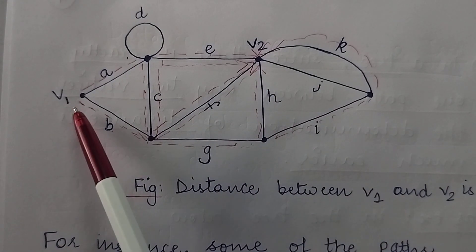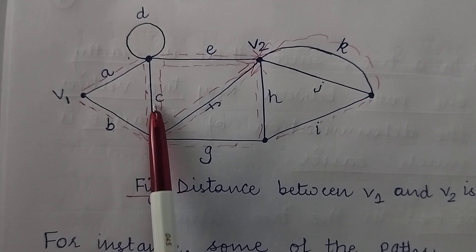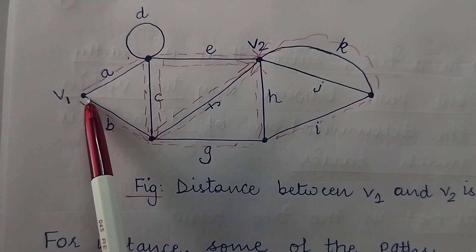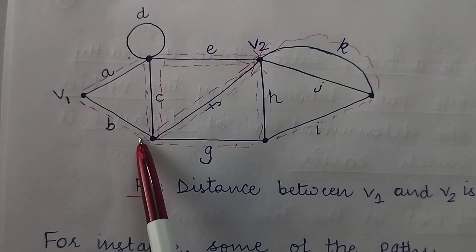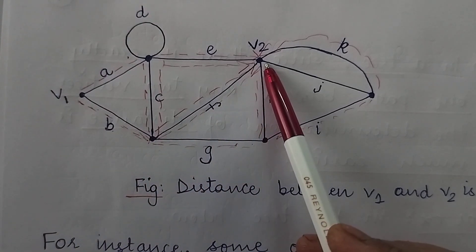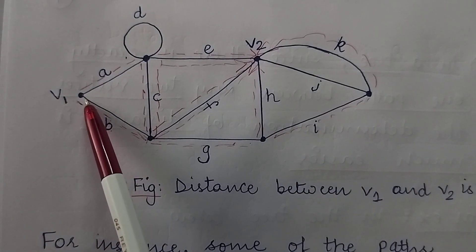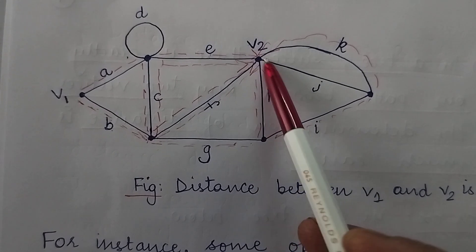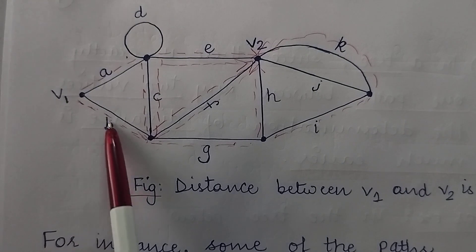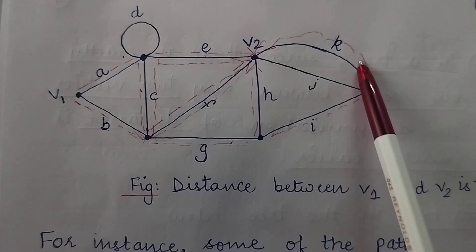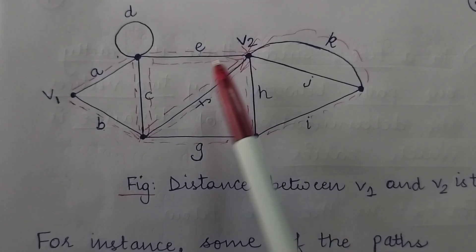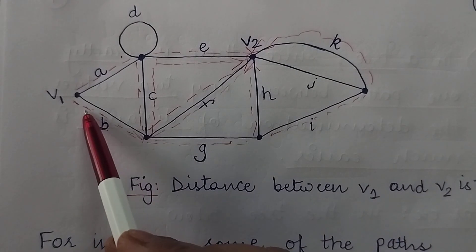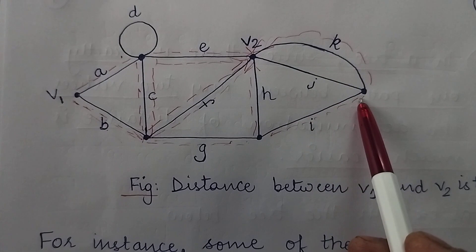The second path is via edges a, c and f. The third path is via edges b, c and e. Another path is via edges b and f — you start from v1, travel across edge b, then edge f and reach v2. The fifth path is via b, g and h. Finally the sixth path is via b, g, i and k, and there is one more path via b, g, i and j.